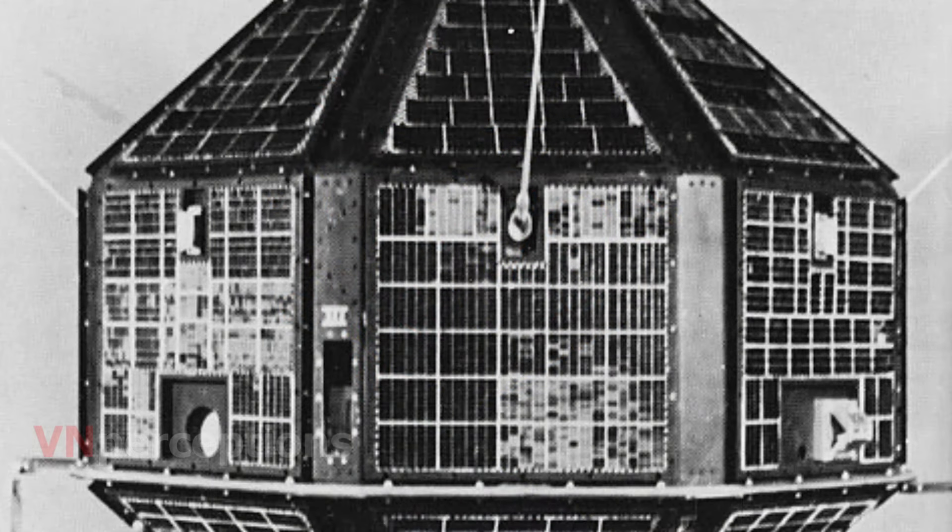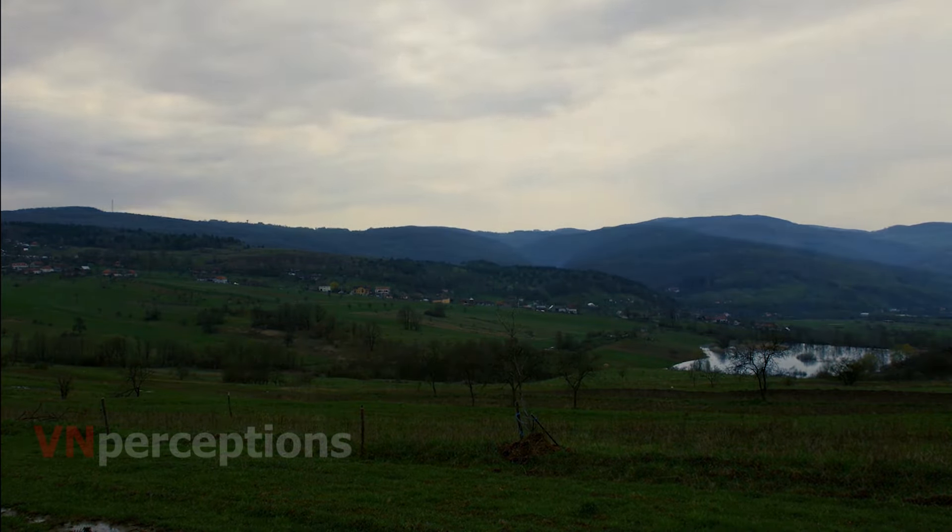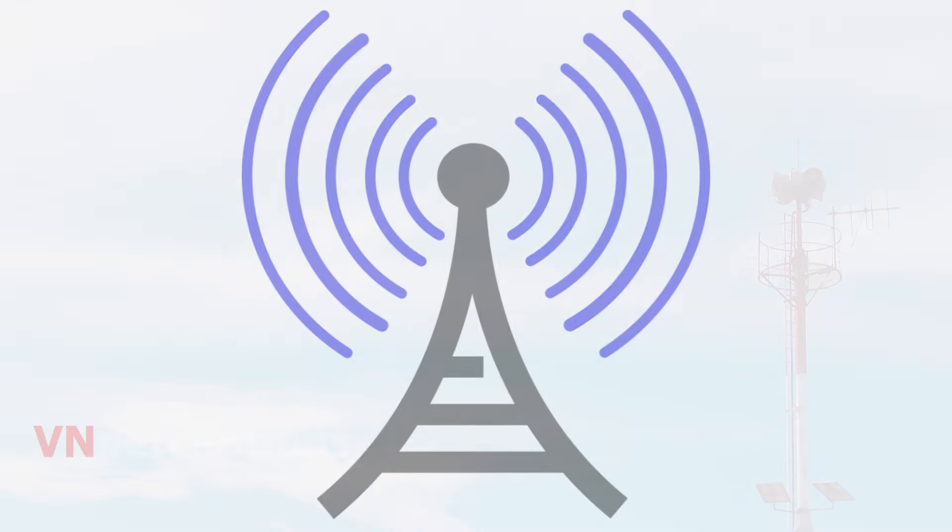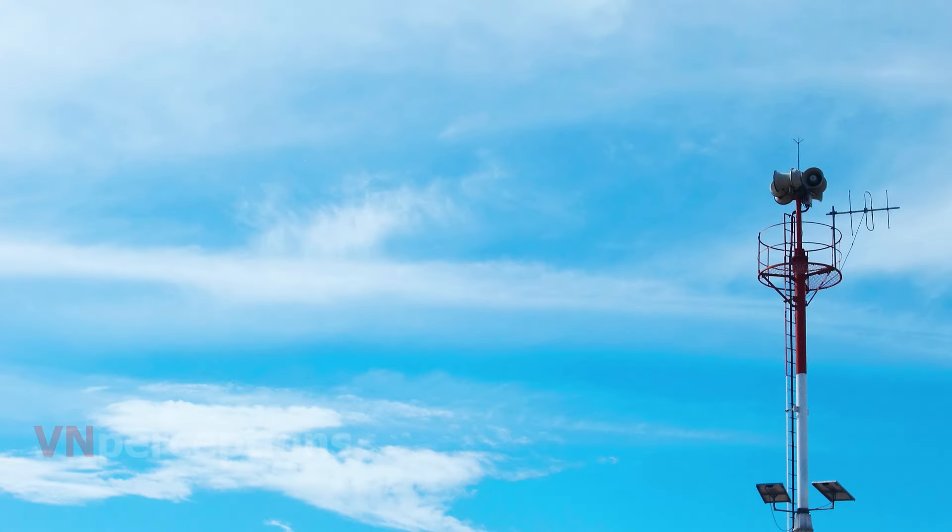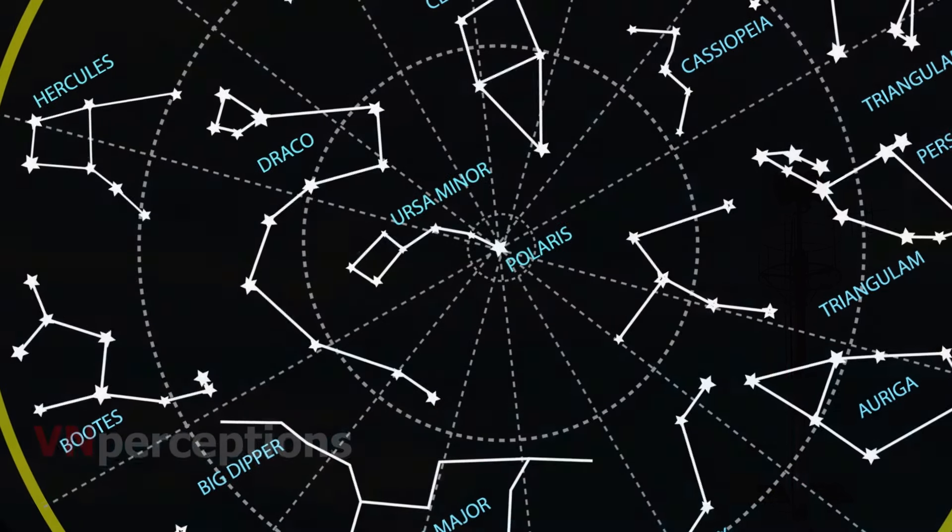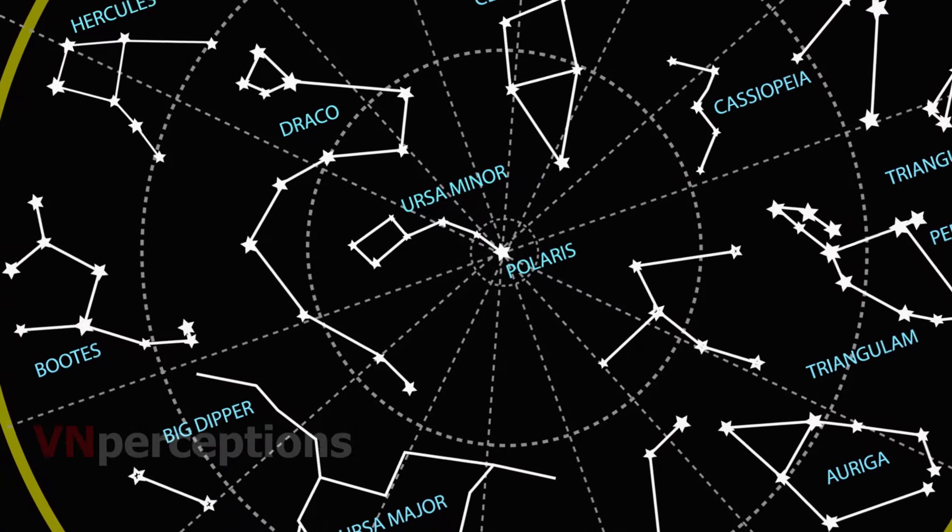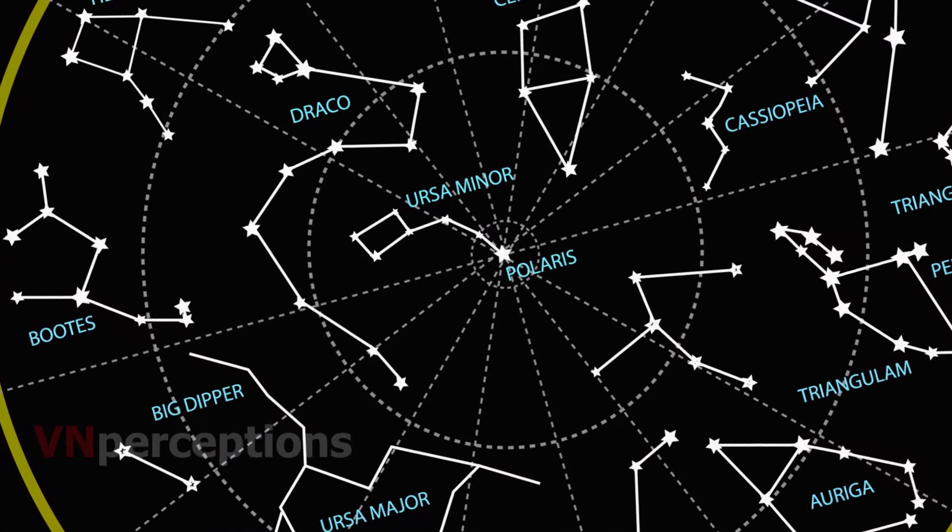Artificial satellites have many practical applications. They are used for forecasting weather, transmitting television and radio signals. They are also used for telecommunication and remote sensing. While watching the night sky, you may notice various patterns formed by different groups of stars. These are called constellations.